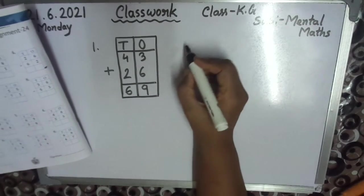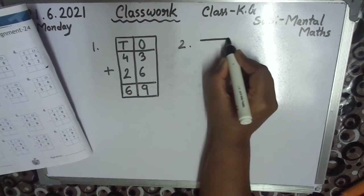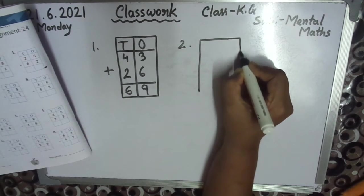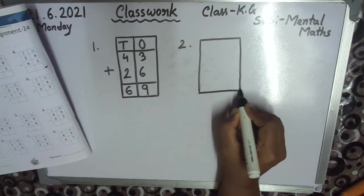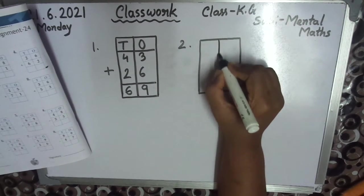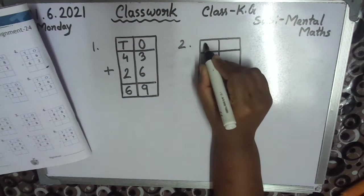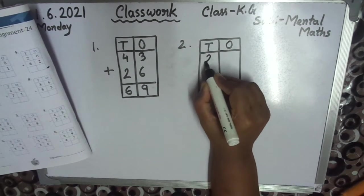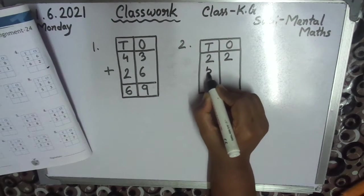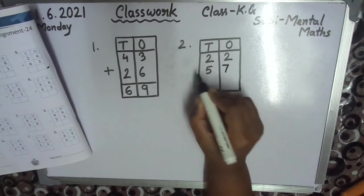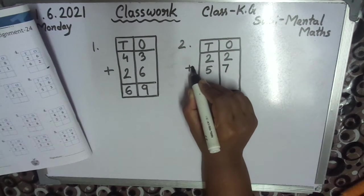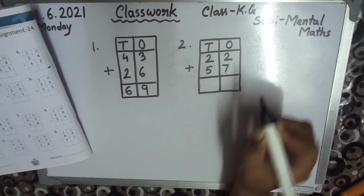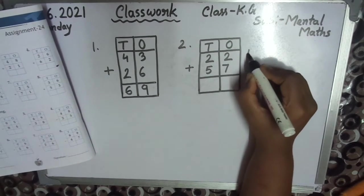Number 2. Tens, ones. 22+57. Sign, see. Plus sign means addition. Addition, okay?